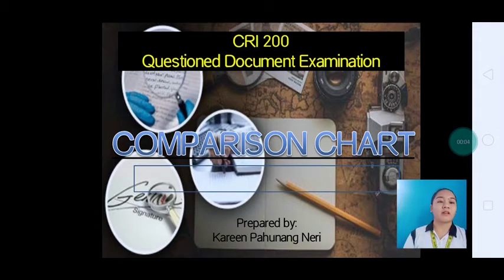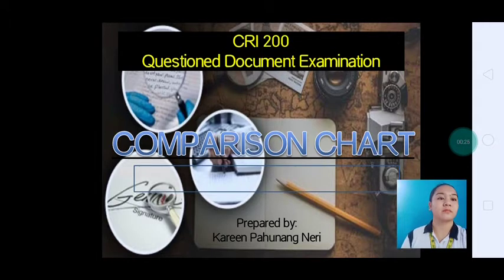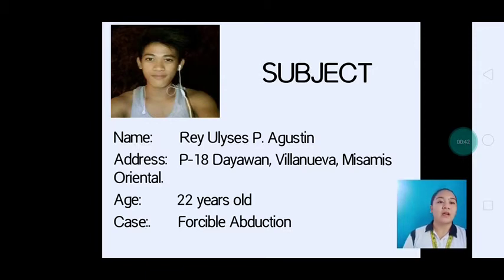Good day, sir. I am Karen Nering, a questioned document examiner under the subject CRI-200, or questioned document examination. Today, I will present to you a comparison chart as supporting evidence for why I say that this person allegedly wrote the ransom note. This person is my subject, Ray Ulysses P. Agustin, a resident of Porok 18, Dayawan Villanueva, Misamis Oriental, 22 years old, and guilty of forcible abduction.